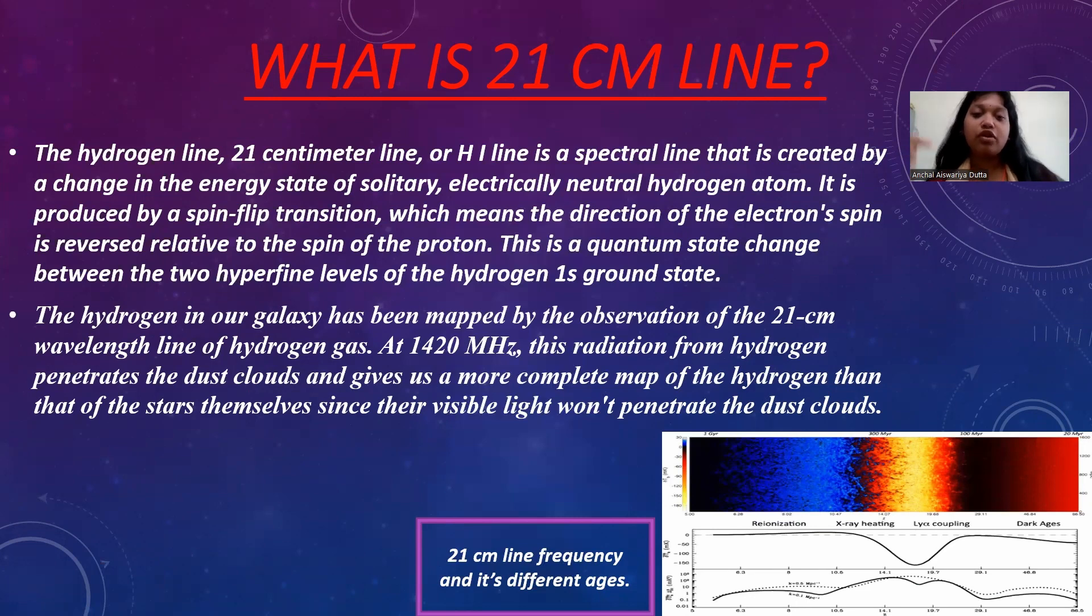From the H2 it will go to the lower, from the higher energy state to a lower energy state. This change in electron spin results in the emission of electromagnetic radiation at the wavelength of approximately 21 centimeter, or 21.1 centimeter to be more precise.